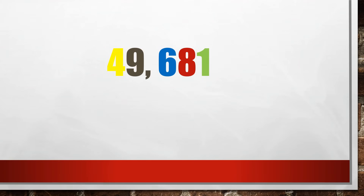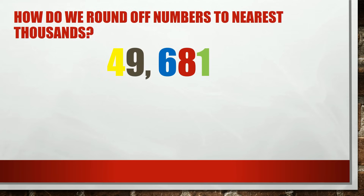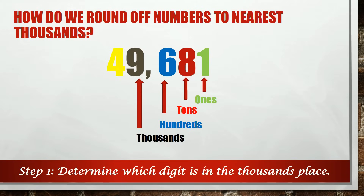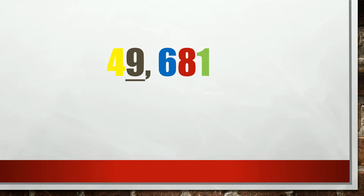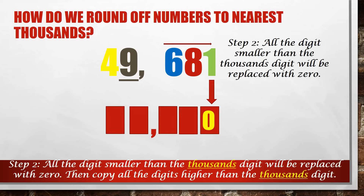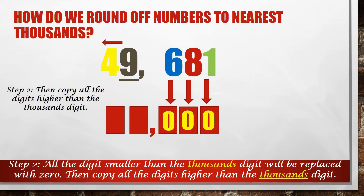Let's have another example. Let's round off 49,681 to the nearest thousand. Step 1: determine which digit is in the thousands place — ones, tens, hundreds, thousands. 9 is in the thousands place. Let's underline 9 as the digit we need to round off. Step 2: all digits to the right of 9 will be replaced by 0. So 1 will become 0, 8 will become 0, and 6 will become 0. Then copy all digits higher than the thousands digit — those are to the left. In this example, the digit is 4, so we simply copy it.